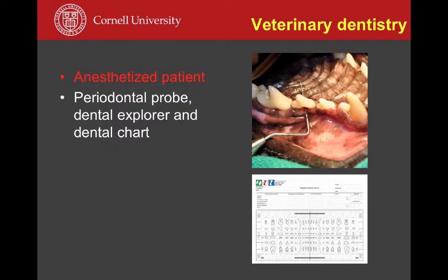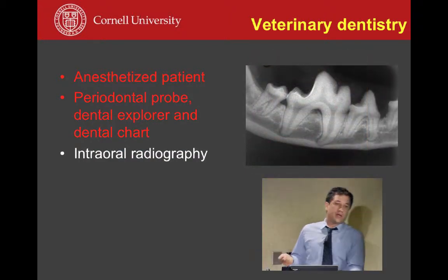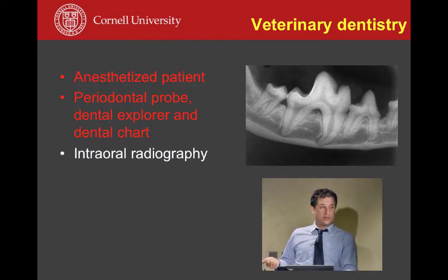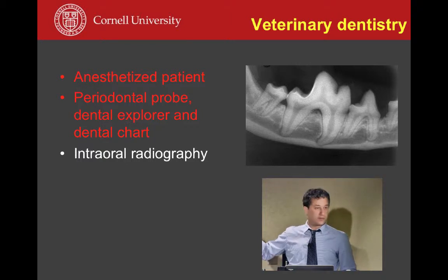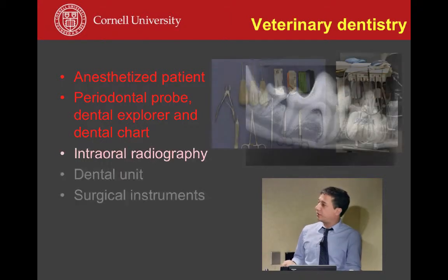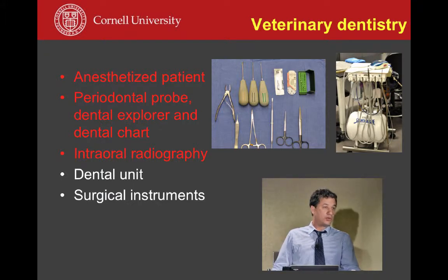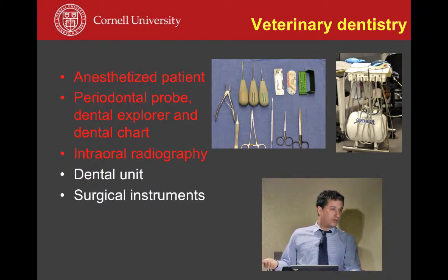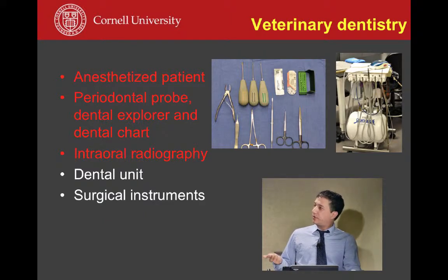We're going to need a chart to record everything that we find in the mouth. Everything needs to be recorded because there are a lot of parameters to acquire to allow a proper diagnosis. We're also going to need intraoral radiology, which is critical in regards to diagnosis of dental disease. The data acquired with the probe and explorer will be complemented by radiographs — the two together will allow a proper diagnosis.